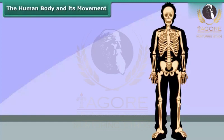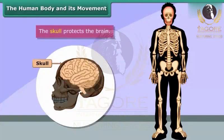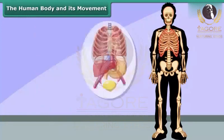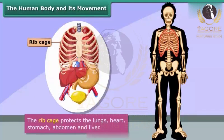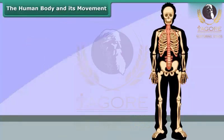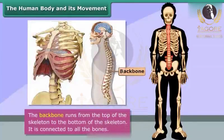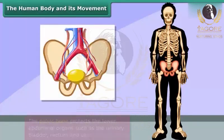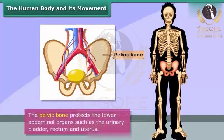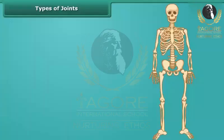Most of the bones protect our organs. The skull protects the brain, while the rib cage protects the lungs, heart, stomach, abdomen and liver. The backbone runs from the top of the skeleton to the bottom and is connected to all the bones. The pelvic bone protects the lower abdominal organs such as the urinary bladder, rectum and uterus.